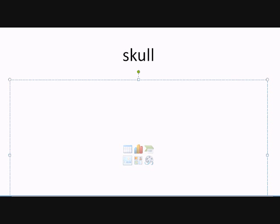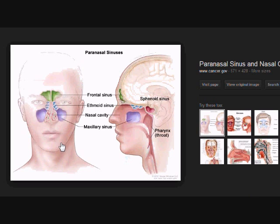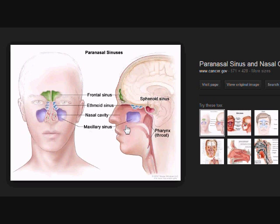We haven't gone over the sinuses yet, so let's look at an image of the paranasal sinuses. At the very top you have the frontal sinus — you can see it right below the frontal bone and right above the nasal bone. Further back we have the sphenoid sinus. At the bottom, the maxillary sinus — remember, the upper jaw was the maxilla. And then we have the ethmoid sinuses. This gives a really good general view of where the sinuses are located, and that's all you really need to know.